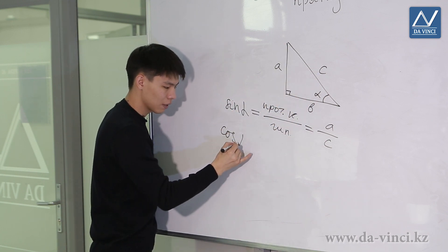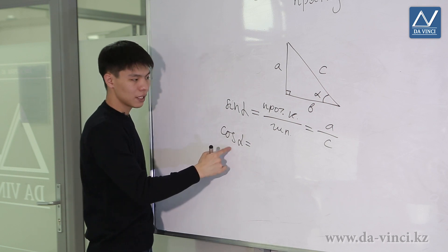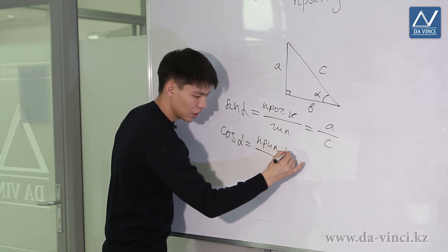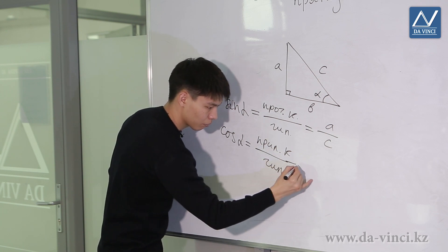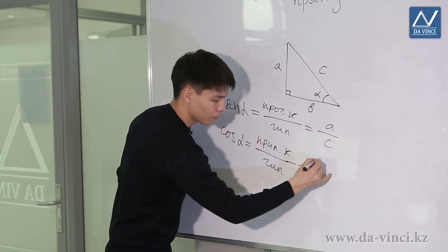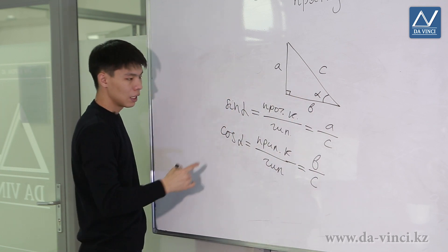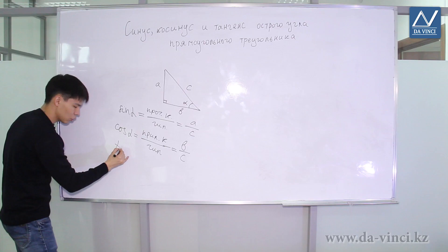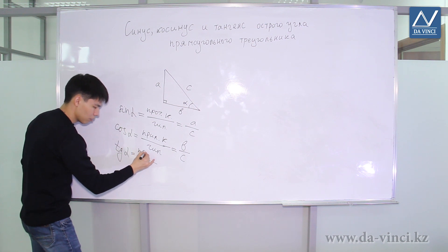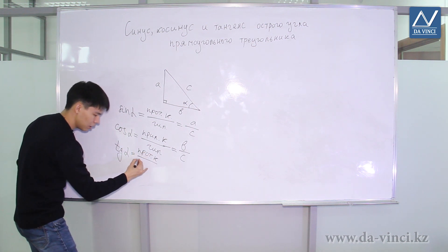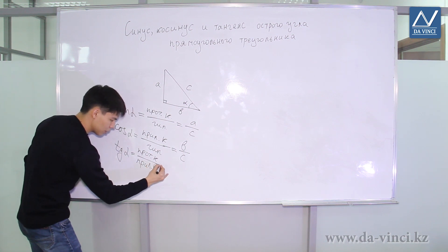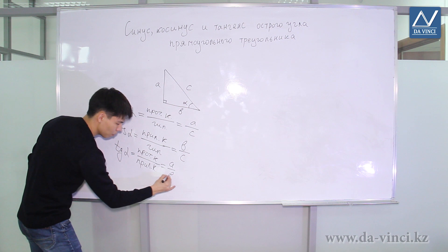The concept of cosine of alpha is introduced similarly. Cosine is the ratio of the adjacent side over the hypotenuse. In this case, leg B is adjacent to alpha — that is, B divided by C. The tangent of an angle is written as follows: tangent alpha is the ratio of the opposite leg to the adjacent leg. So in this case, it is A divided by B.